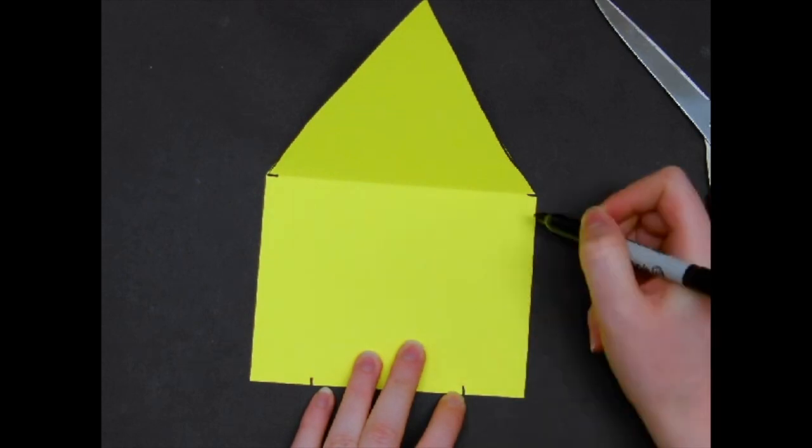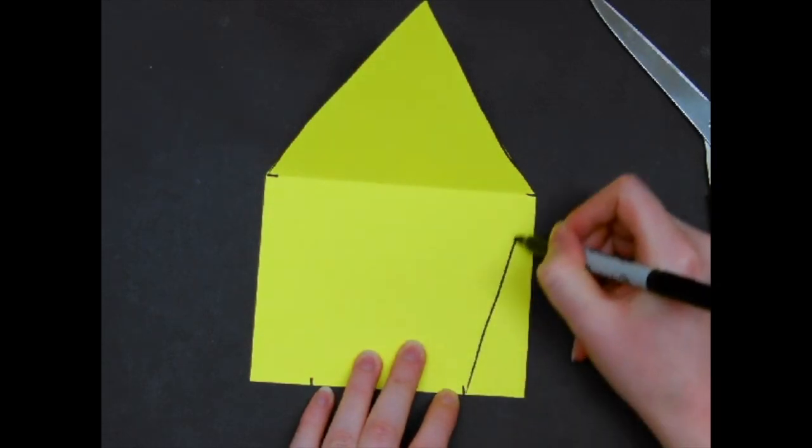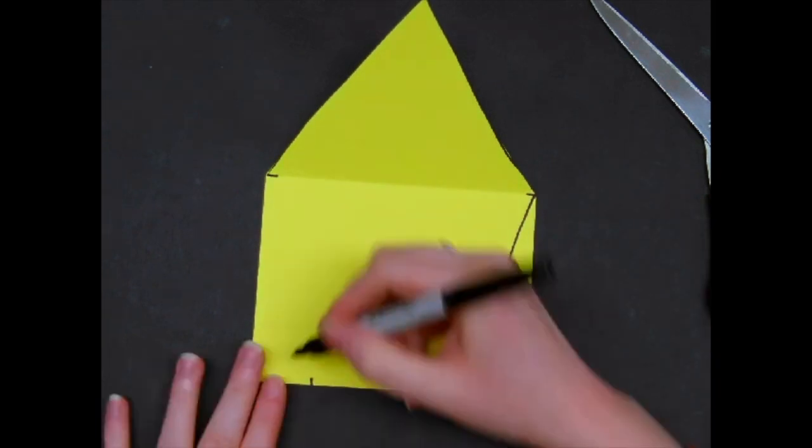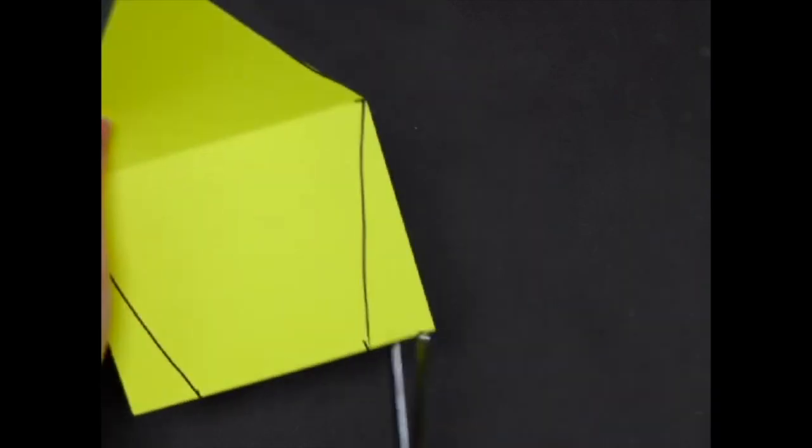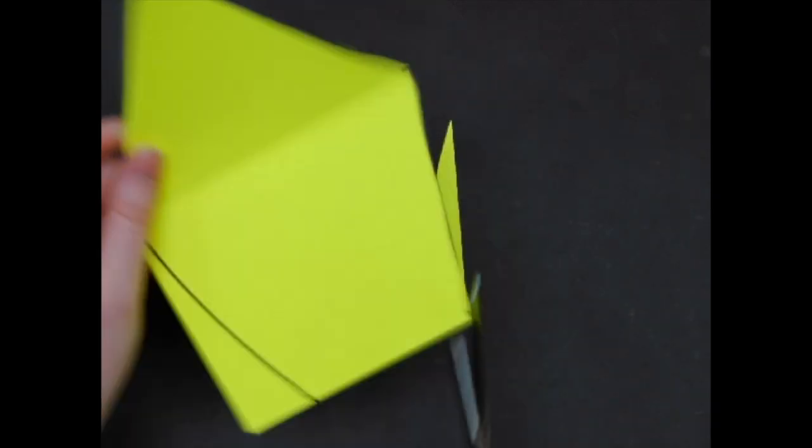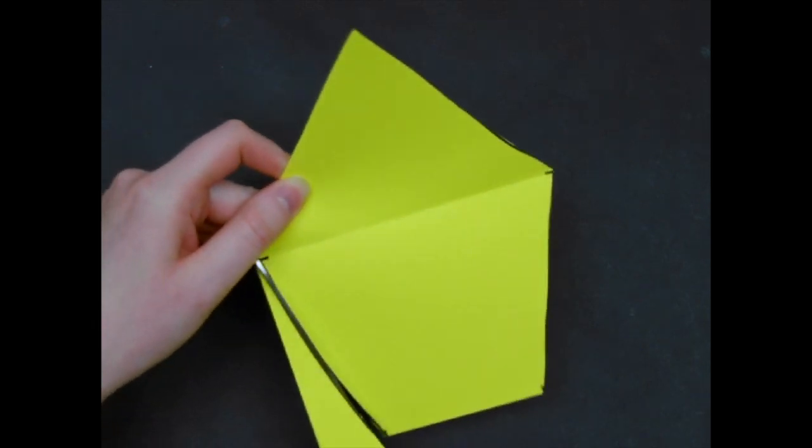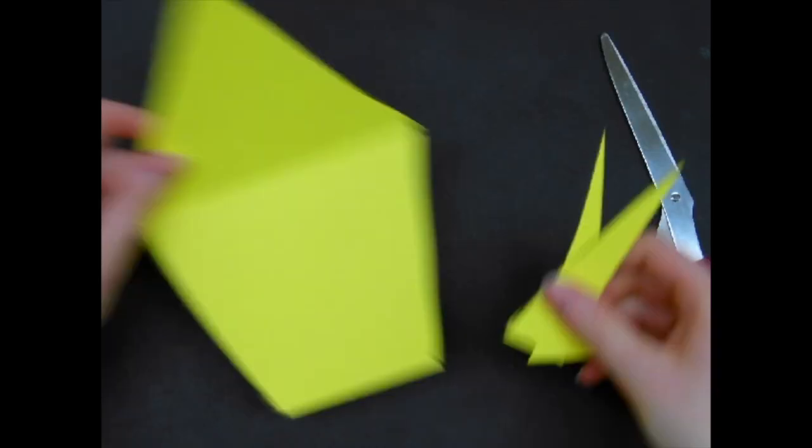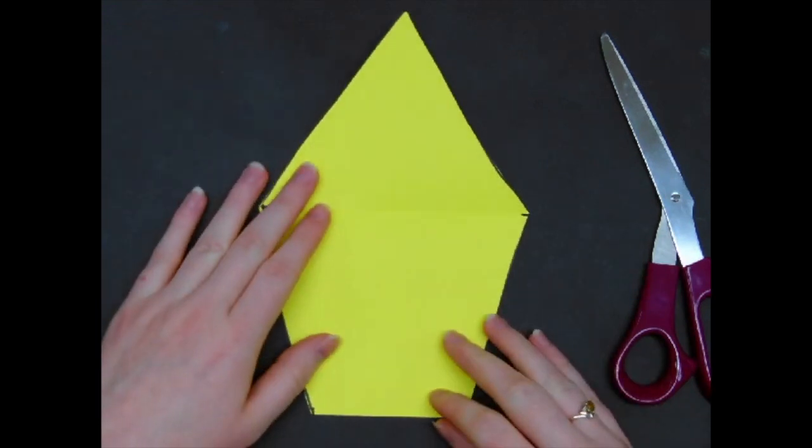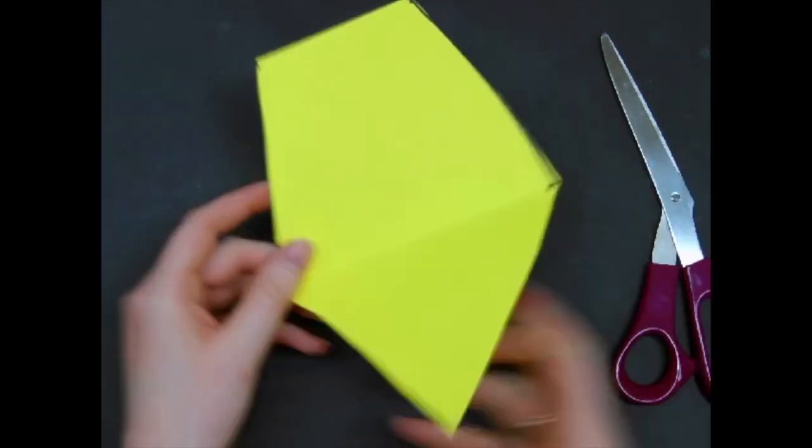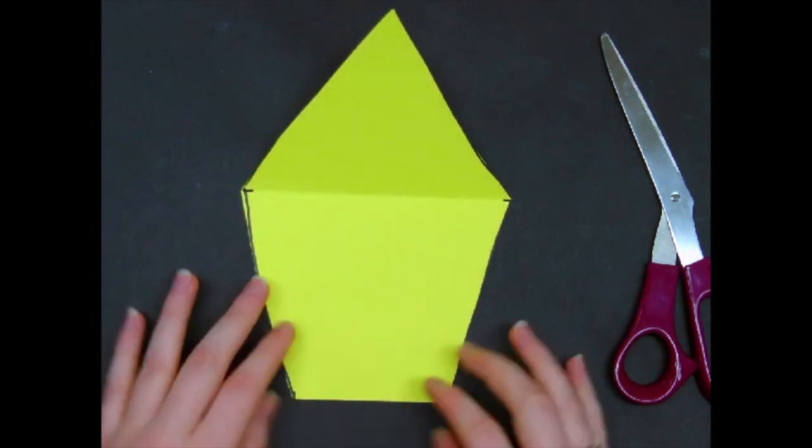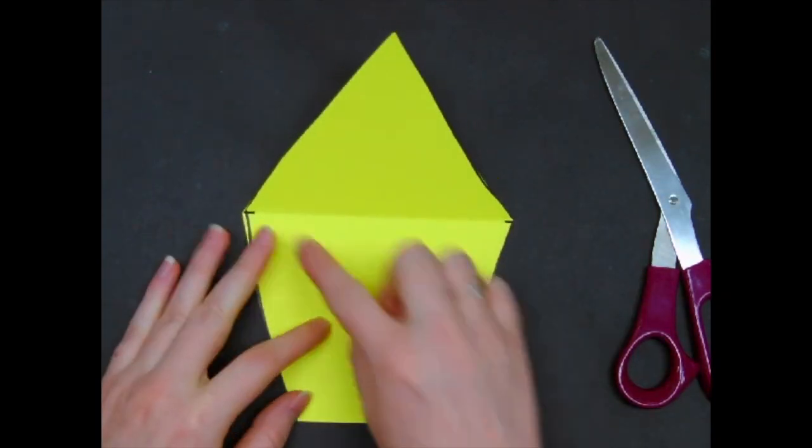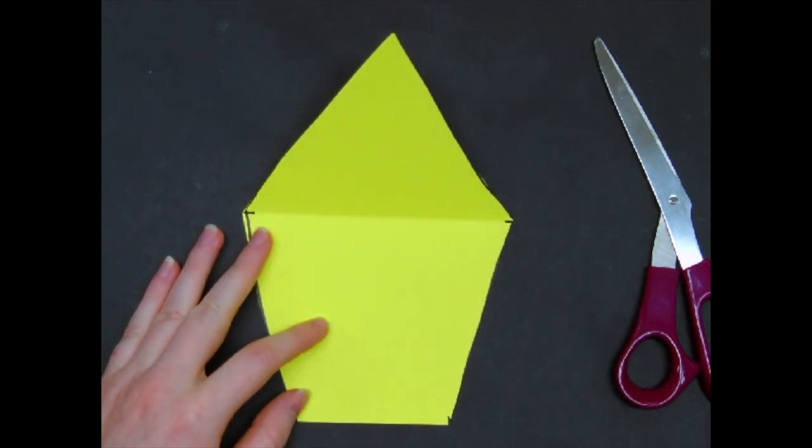You're going to draw a line from the dash mark to that closest top corner. And we're going to do the same thing on the other side. Again, with the scissors, we're going to cut on those black lines. Just set these pieces of paper off to the side. Now you should have a triangle on one side and a trapezoid on the other. The trapezoid is going to be the wrapper for our cupcake and the triangle is where the icing goes.